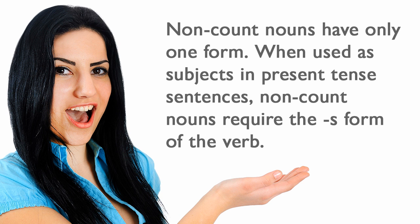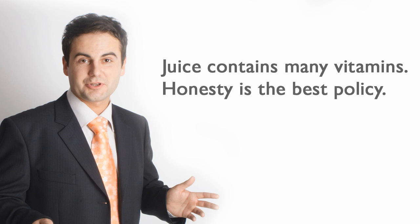Non-count nouns have only one form. When used as subjects in present tense sentences, non-count nouns require the s-form of the verb. For example: Juice contains many vitamins. Honesty is the best policy.